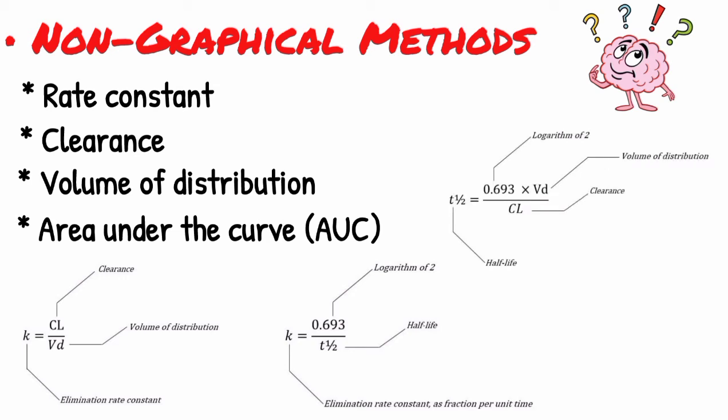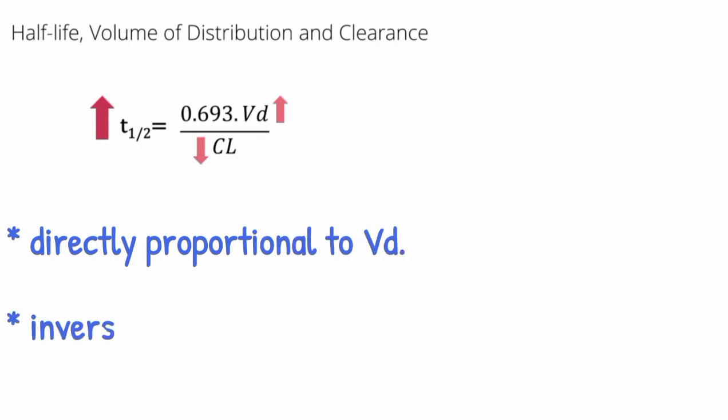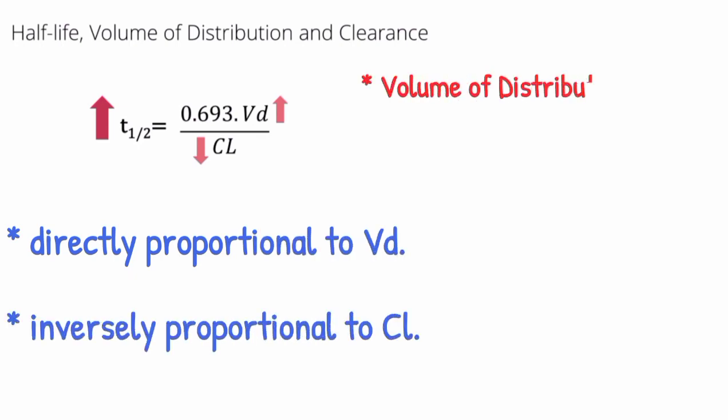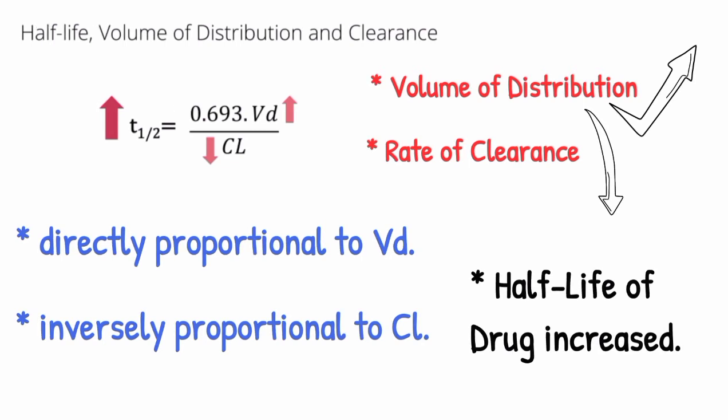If we know the value of rate constant, clearance, and volume of distribution, you can also notice from the formula that half-life is directly proportional to volume of distribution and inversely proportional to rate of clearance. So if we increase the value of Vd or decrease the rate of clearance, then half-life of that drug will be increased.